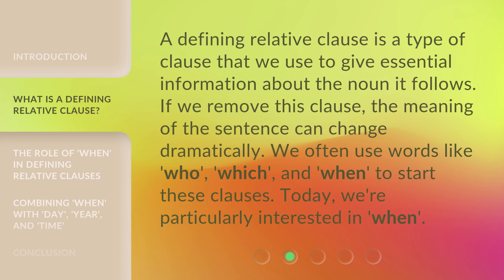A defining relative clause is a type of clause that we use to give essential information about the noun it follows. If we remove this clause, the meaning of the sentence can change dramatically. We often use words like 'who,' 'which,' and 'when' to start these clauses. Today, we're particularly interested in 'when.'